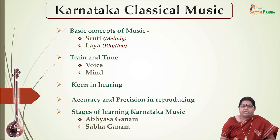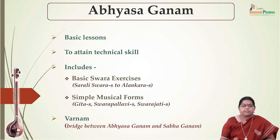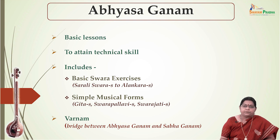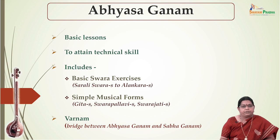The different stages of learning Karnataka music are classified as Abhyasaganam and Sabhaganam. Abhyasaganam comprises the basic lessons designed for attaining technical skill in the art, and includes the basic Swara exercises — the Sarali Swaras to Alankaras — and simple musical forms like the Gitas, Swarapallavi, and Swarajatis. Varnam is a musical form which acts as a bridge between Abhyasaganam and Sabhaganam.